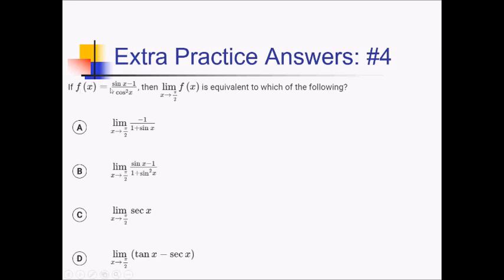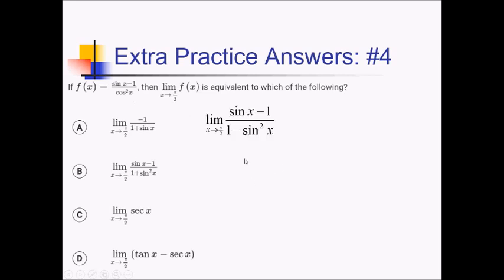For this problem, we're given that f of x equals sine of x minus 1 over cosine squared of x, and we want to know what the limit as x approaches pi over 2 is equivalent to. If you plug in pi over 2, you get 1 minus 1 over 0 squared — basically 0 over 0, which is no good. The key is that cosine squared can be turned into something else using the Pythagorean identity: sine squared plus cosine squared equals 1, so cosine squared equals 1 minus sine squared. We replace cosine squared with 1 minus sine squared.